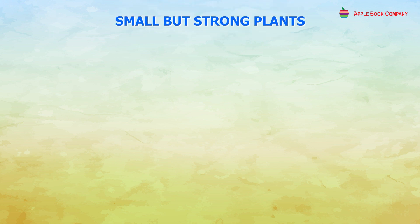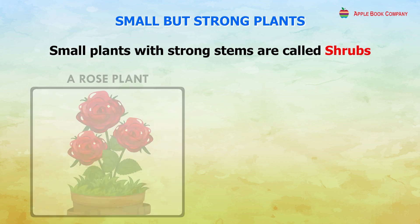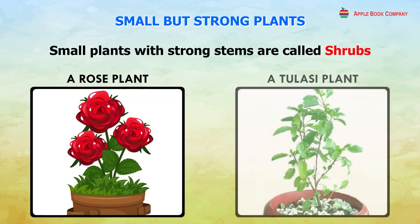Small plants with strong stems are called shrubs. A rose plant and a tulsi plant are examples of shrubs.